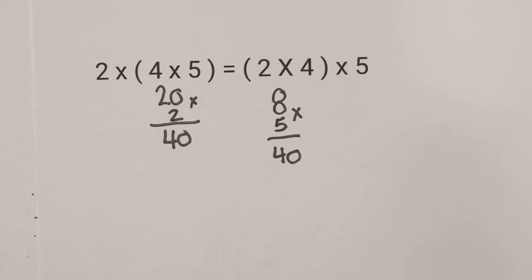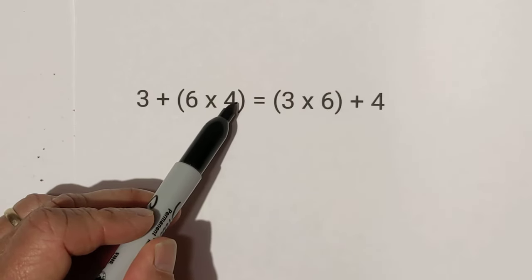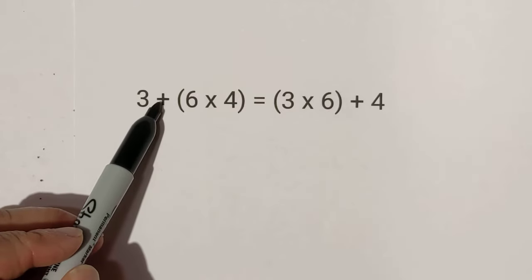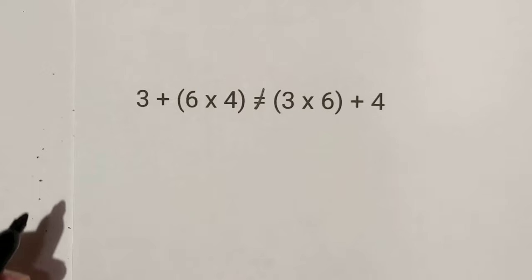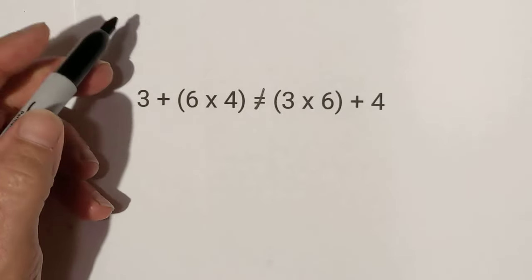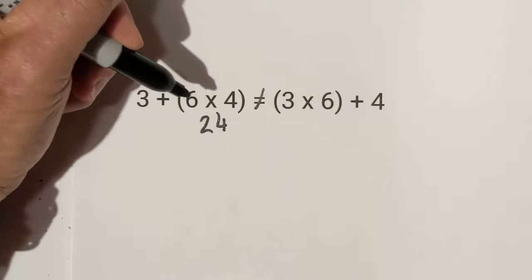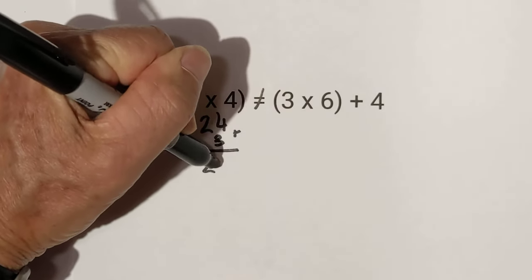Now let me show you something that it does not work for. In this example, the 6 is associated with the 4. On this side, the 6 is associated with the 3. But you have multiplication and addition, so they are not equal. Let me show you why. 6 times 4 is 24, plus 3 equals 27.